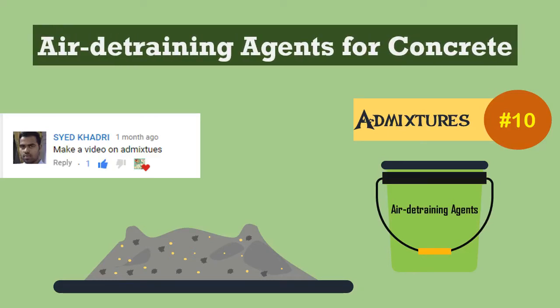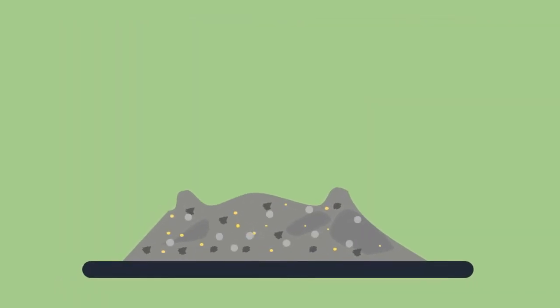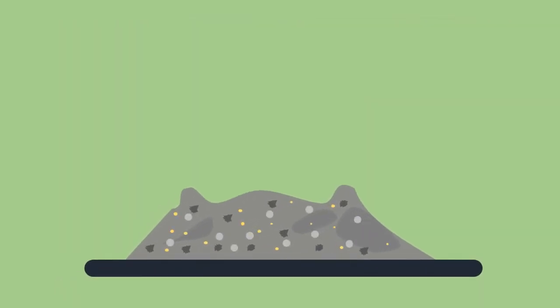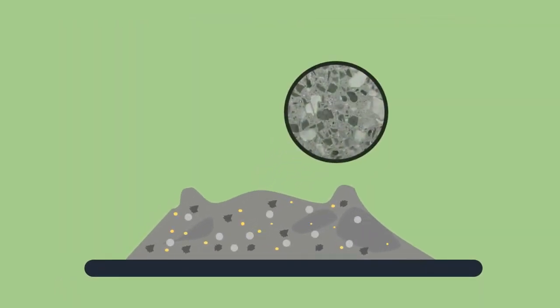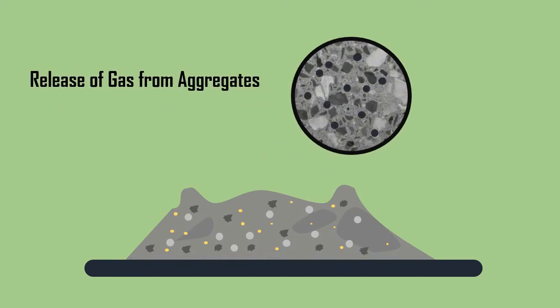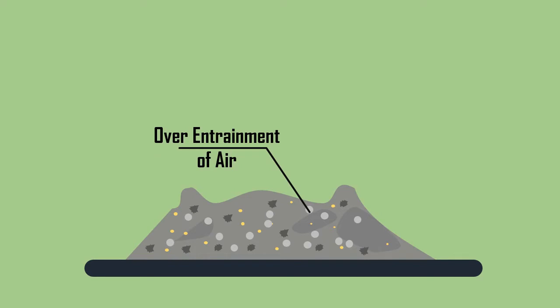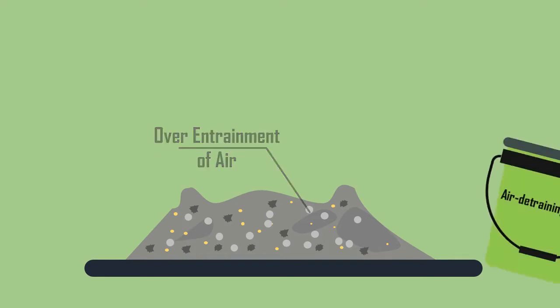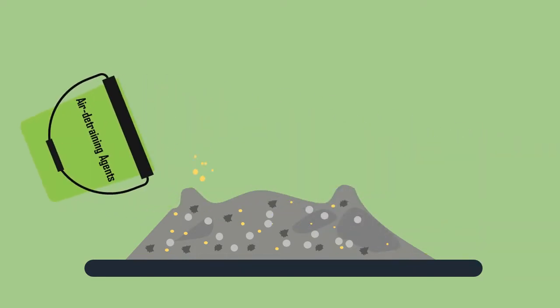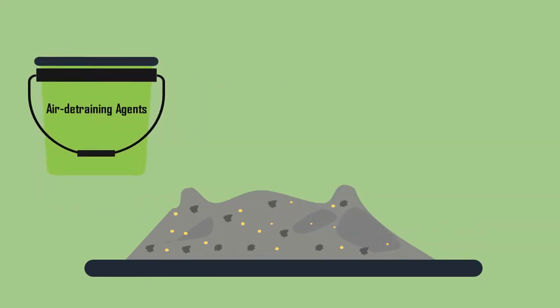Air Detraining Agents for Concrete. In some cases, such as an excess release of gas from aggregates or over-entrainment of excess air in the plastic concrete, it may be necessary to use an admixture capable of dissipating the excess air or other gases.